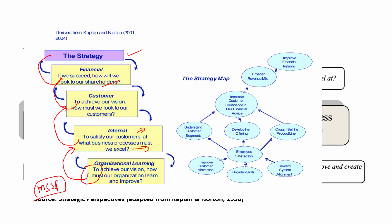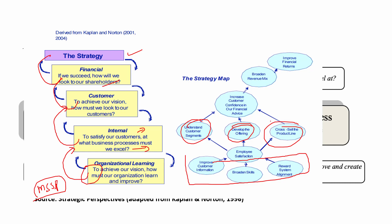Similarly, by improving customer satisfaction and broadening skills with a reward system alignment — that's process and training — we understand the customer segment, develop the offering, and have cross-sell product lines. By this, we increase customer confidence. By increasing customer confidence, it has a direct positive impact on revenue, which improves our financial returns. So when you bring your security strategies together with these four verticals, you get much better visibility.